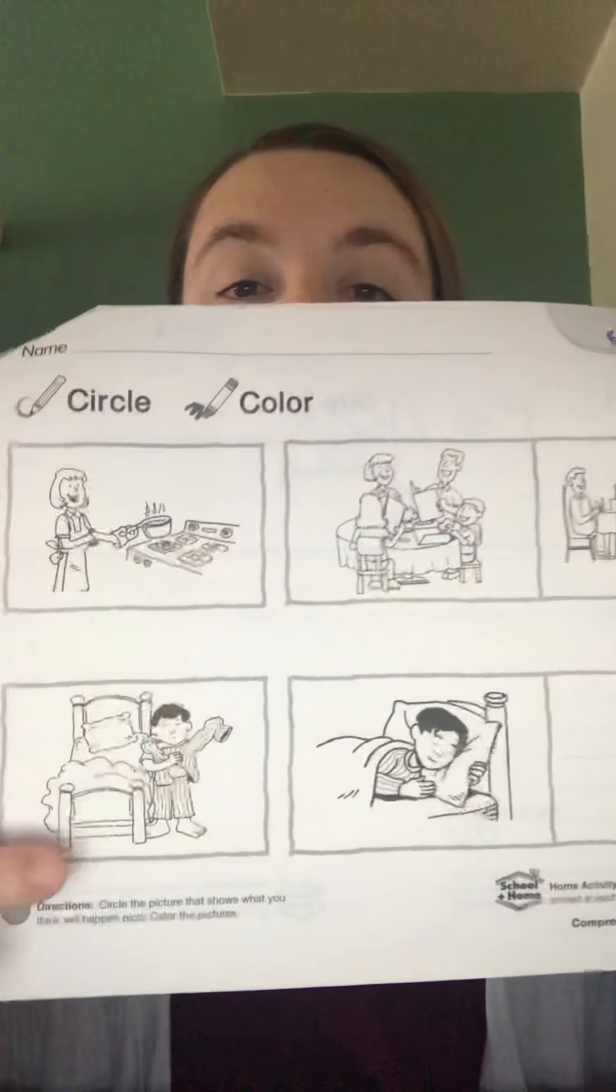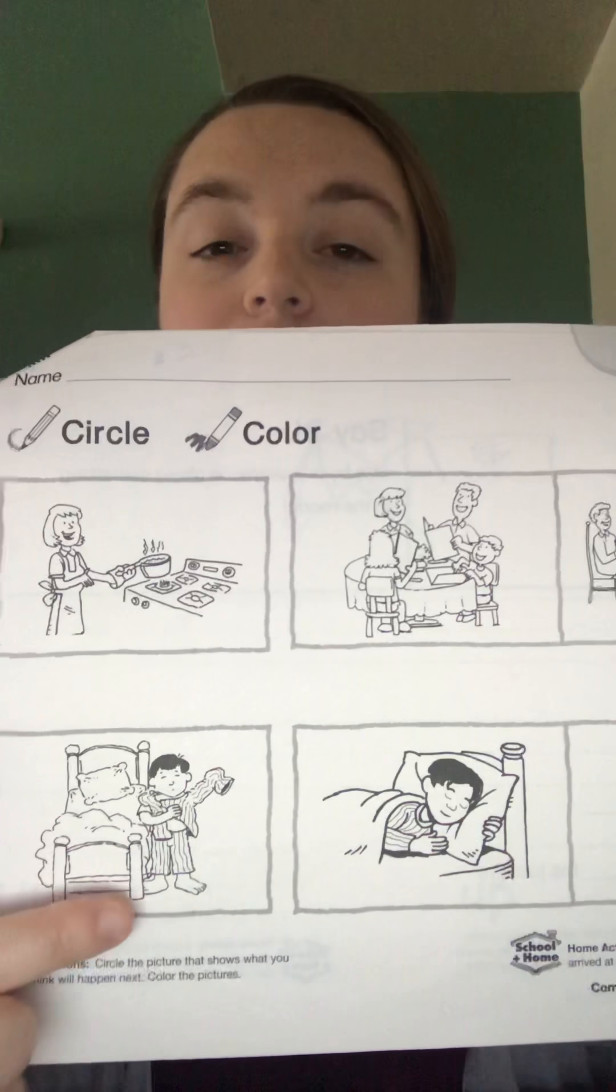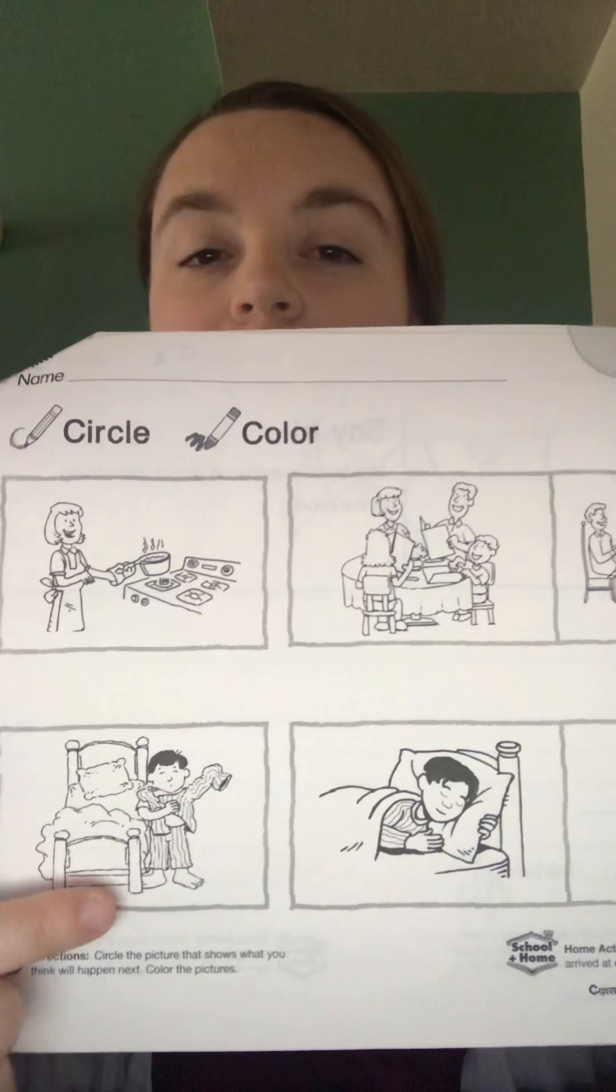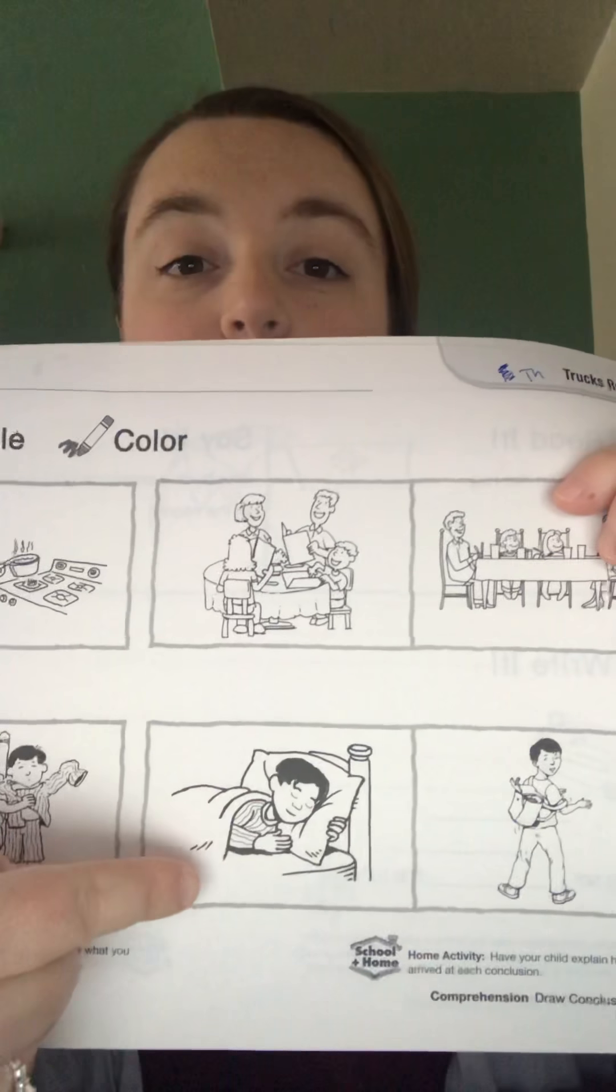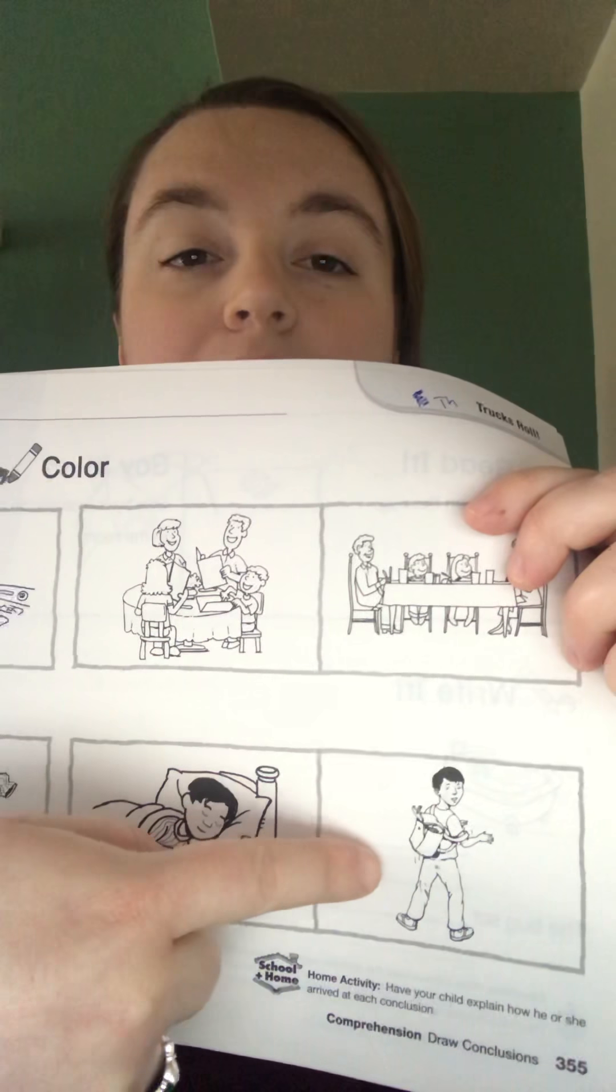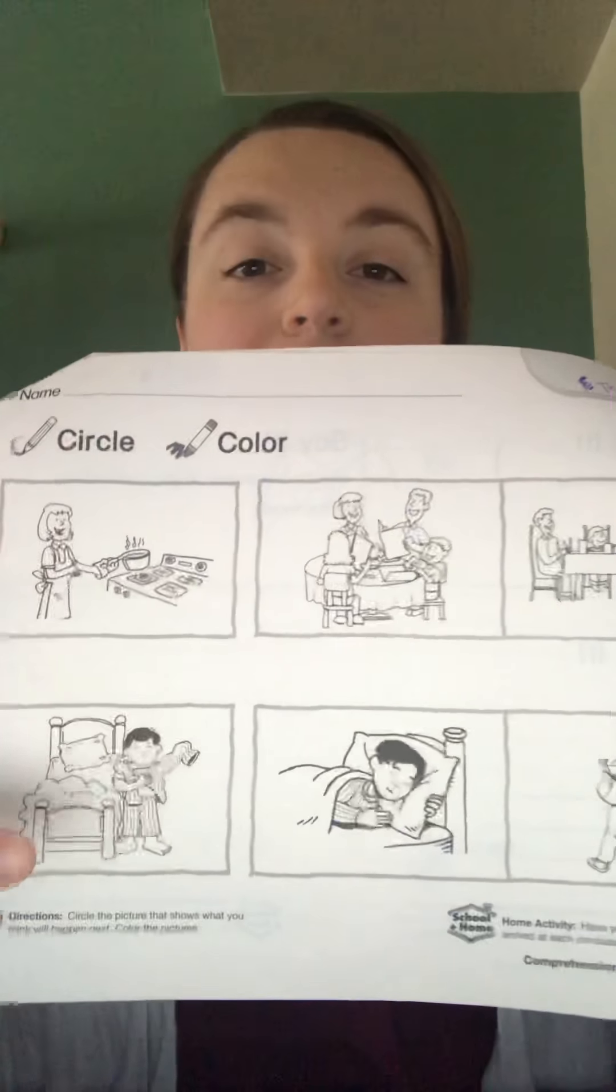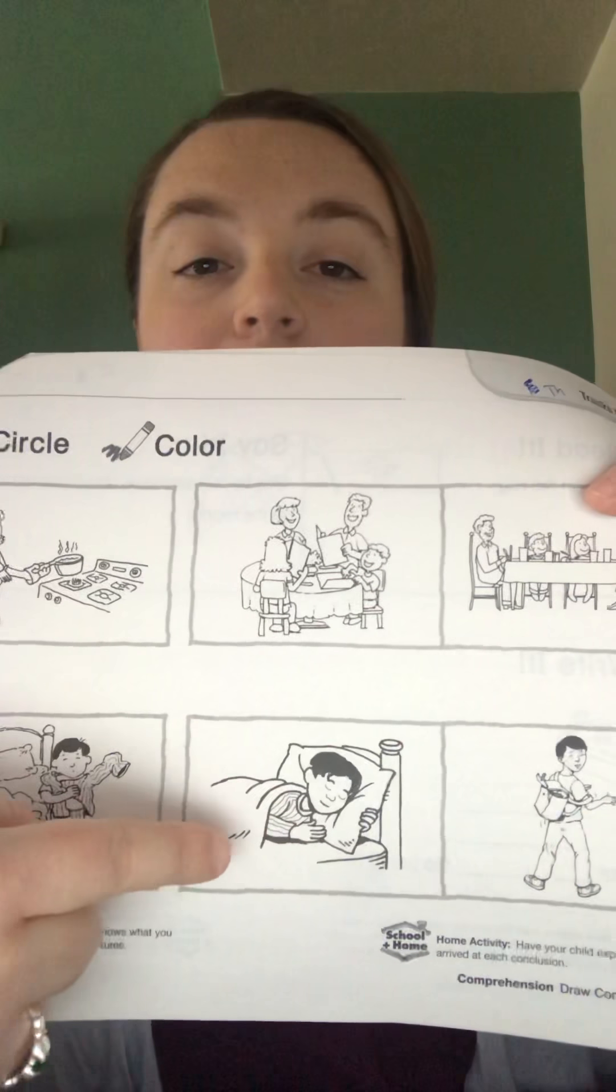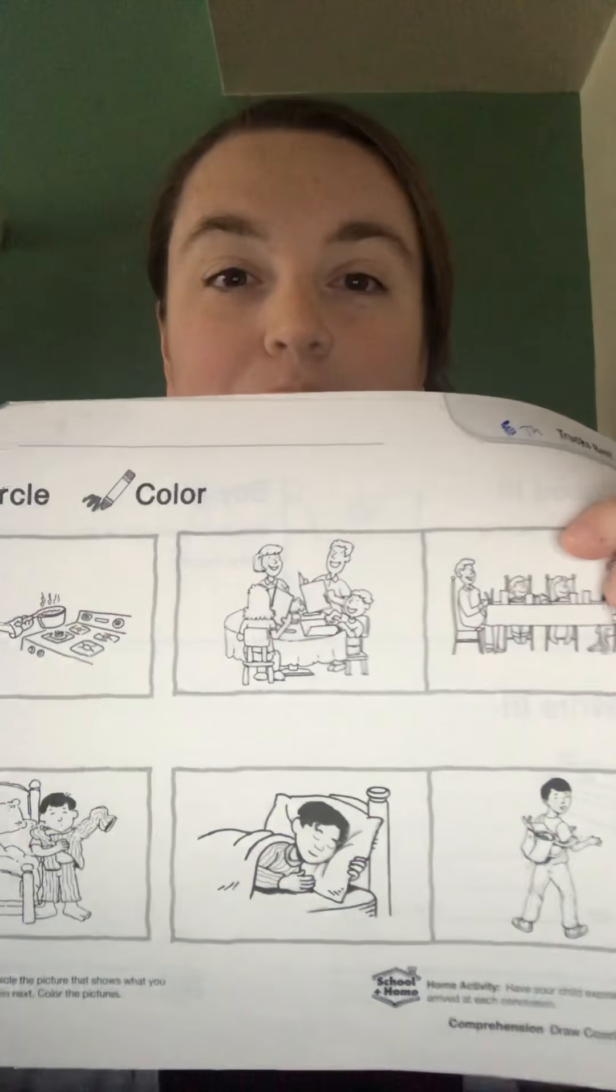Then let's come to our bottom row. We see here a boy. He looks a little bit sleepy and he's putting on pajamas. So what happens next? Does the boy go to sleep or does the boy go to school? I see a backpack on his back so it looks like he might be going to school. What happens after the boy puts on his pajamas? Circle and color the picture that you think comes next.